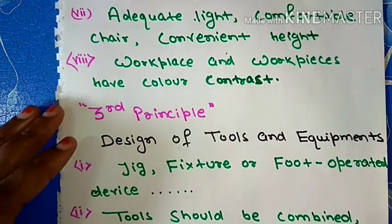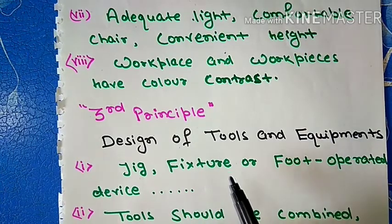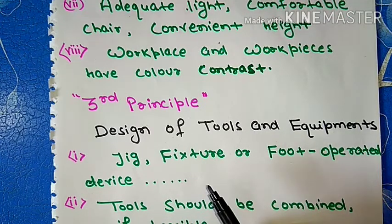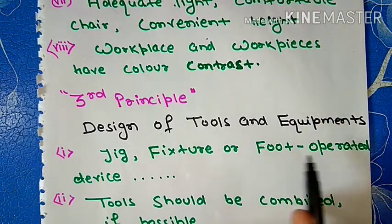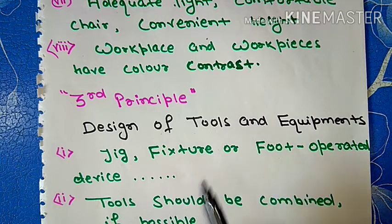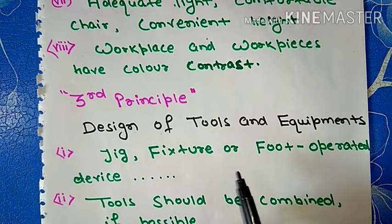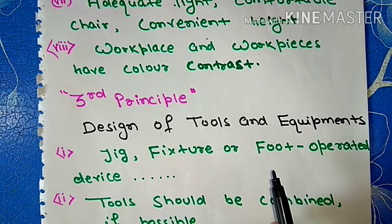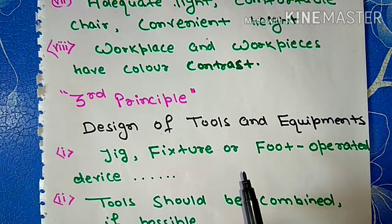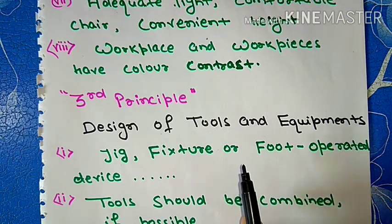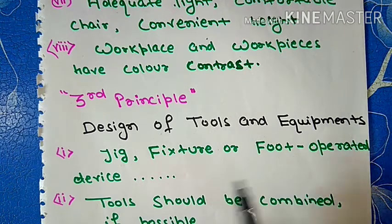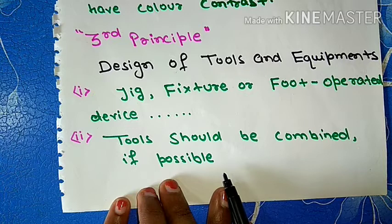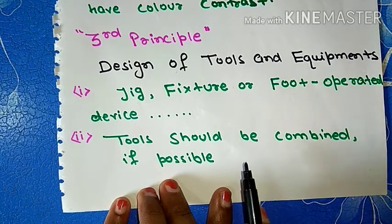The third principle of motion economy is design of tools and equipments. According to this, first point is: as far as possible, jig fixtures or foot operated device should be used instead of hands for holding the workpiece. Second point: tools should be combined if possible. If possible, tools should be combined.